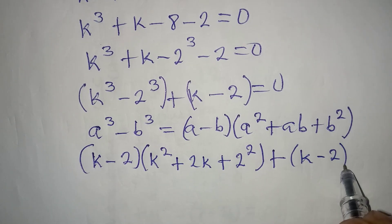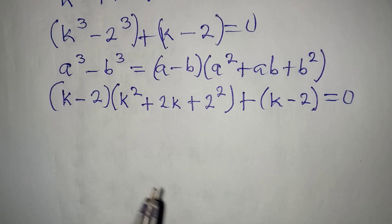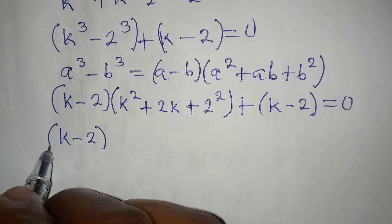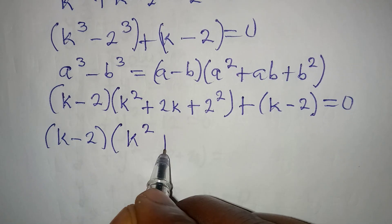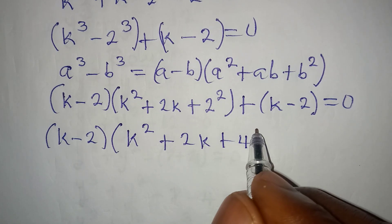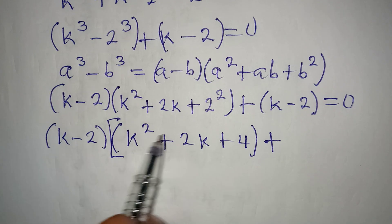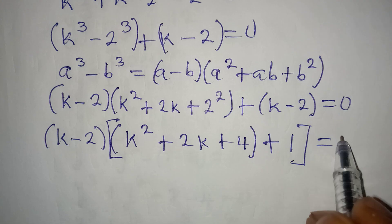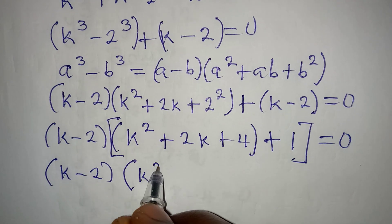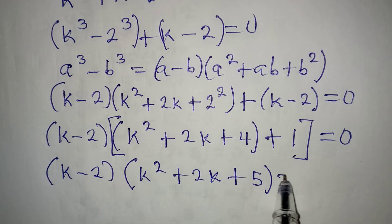So we have (k minus 2) times (k squared plus 2k plus 4), plus the second bracket (k minus 2), equal to 0. Now factor out (k minus 2) because it appears in both groups. We get k minus 2, into k squared plus 2k plus 4 plus 1, equal to 0. That gives k minus 2, times k squared plus 2k plus 5, equal to 0, because 4 plus 1 equals 5.